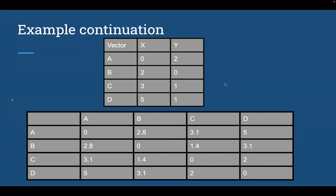Similarity measure between B and C is root over 2 minus 3 whole square plus 0 minus 1 whole square, which is 1.4. And similarity measure between B and D is root over 2 minus 5 whole square plus 0 minus 1 whole square, which is 3.1. And for C and D, root over 3 minus 5 whole square plus 1 minus 1 whole square, which is 2.